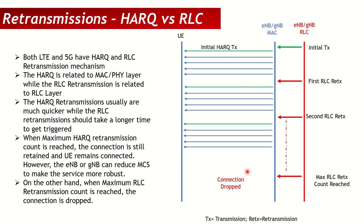In summary, each RLC transmission takes the packet from the RLC layer to the MAC layer. The MAC layer tries to send the packet over the air using HARQ retransmissions, and once all HARQ retransmissions have failed, the RLC layer retransmits the packet to the MAC layer to try again. That is how RLC and HARQ work together to give us a very robust link. That's all for today — if you have more questions, please put them in the comments and I will prepare more short videos. Thank you and have a nice day!